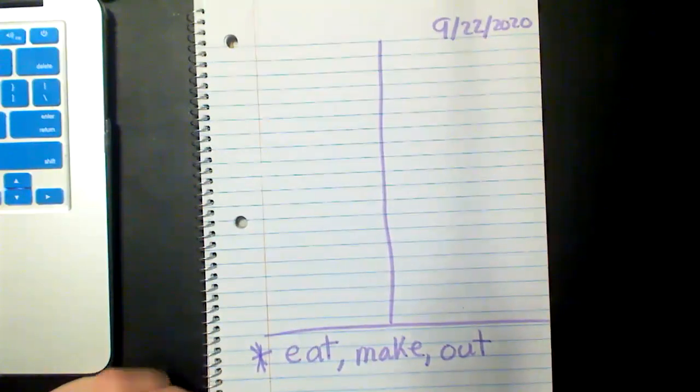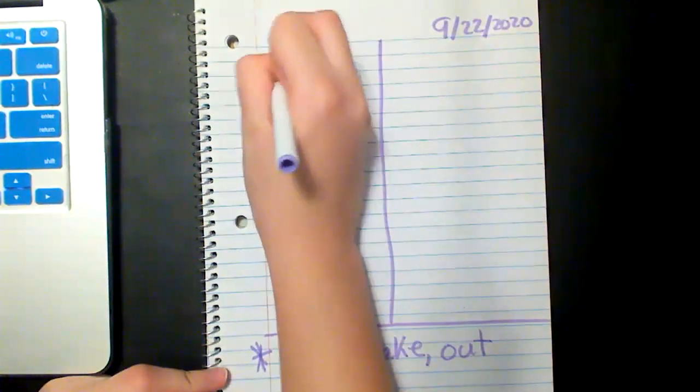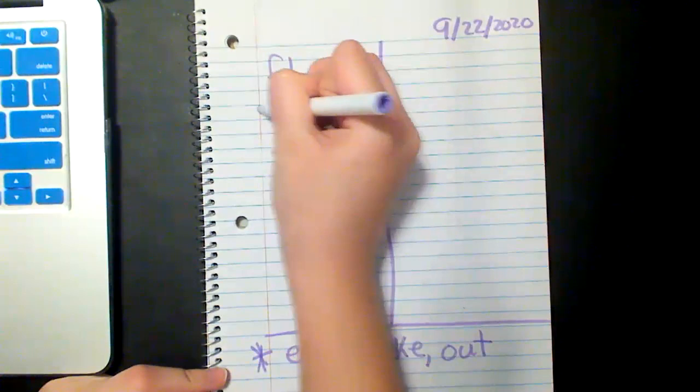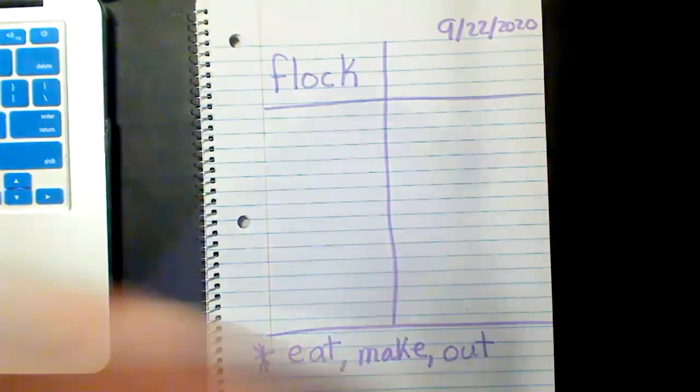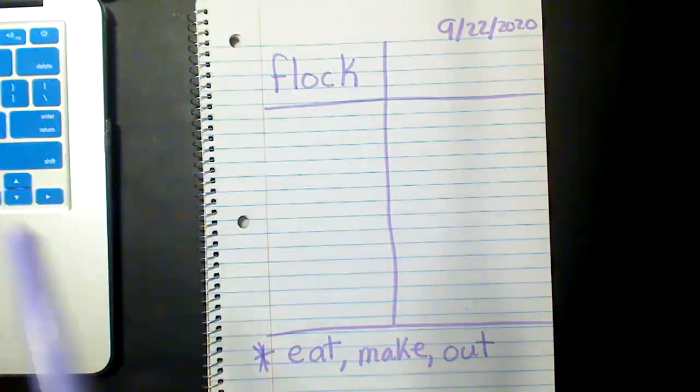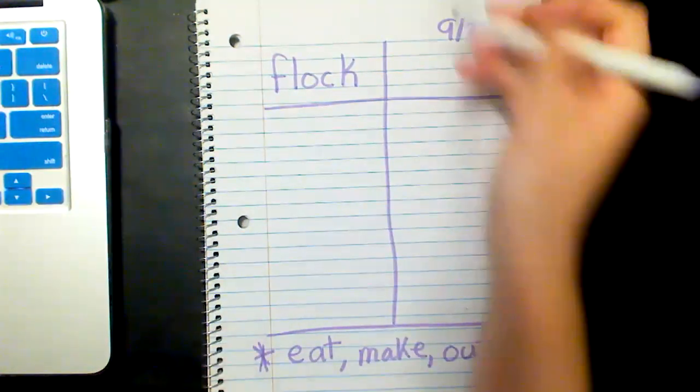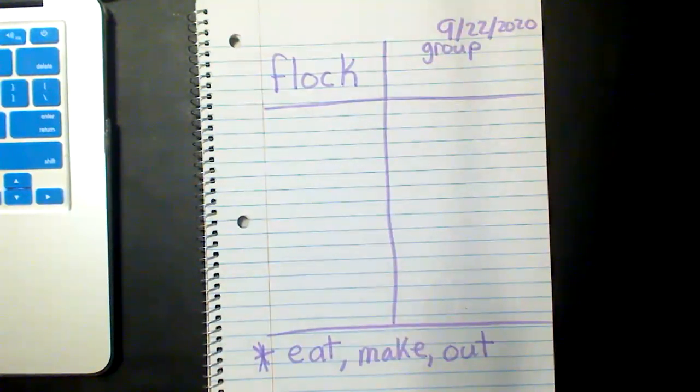And then for our vocabulary word, our first vocabulary word was flock. Now we discussed in class, what does flock mean? What does it mean when there is a flock of birds or a flock of people all put together? And some students were saying it's like a bunch of birds, a bunch of people, maybe a community. And we ended up coming up with the idea of group. It is a group of people or birds or animals.